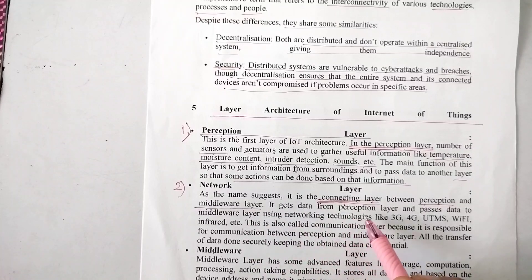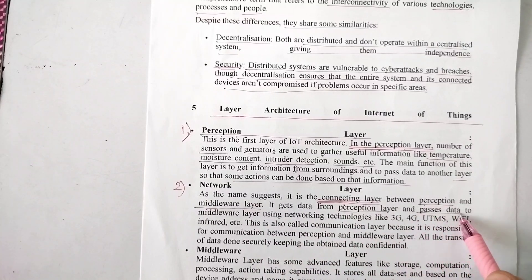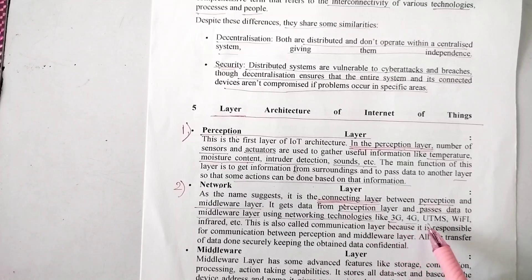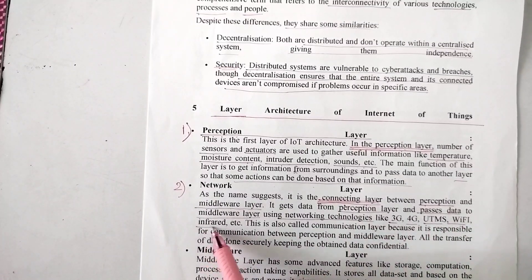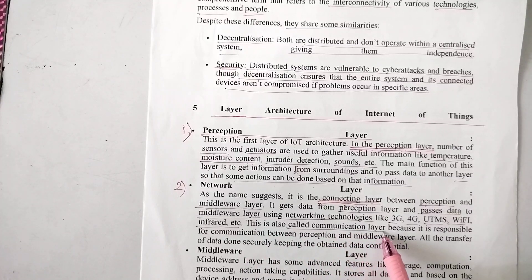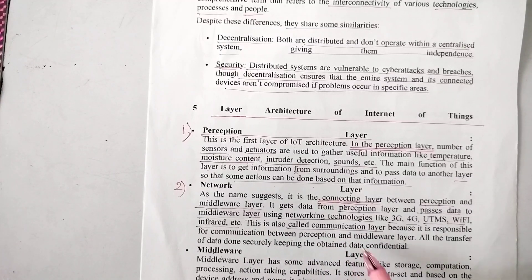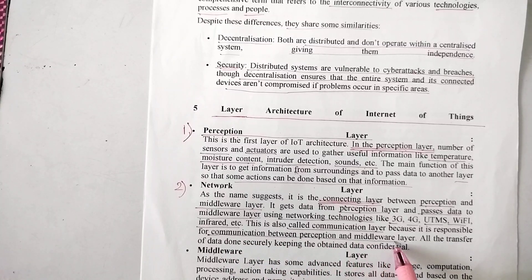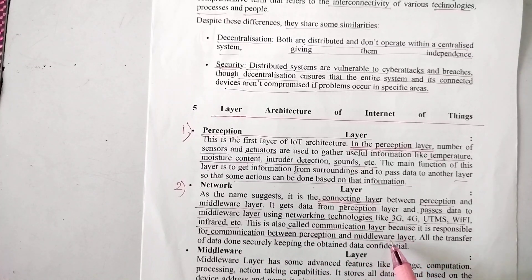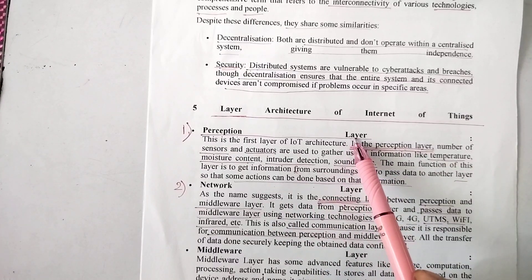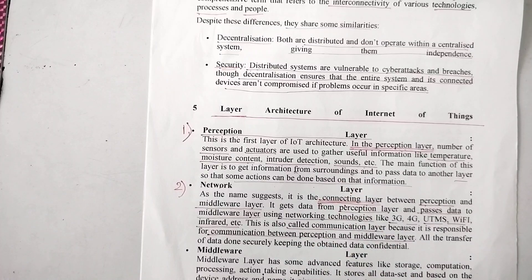It gets the data from perception layer and passes that data to the middleware layer using networking technologies like 3G, 4G, UTMS, Wi-Fi, infrared, etcetera. This is also called the communication layer because it is responsible for communication between perception and middleware layer. This is the layer which provides communication between the perception layer and the middleware layer.